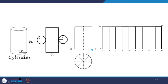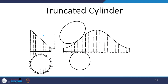For the cylinder, what we have done is: this is h — the height of the cylinder — and we are just rolling it out. It is actually infinite parallel lines in case of a cylinder, and at the two ends we will have the two circles for the bases.